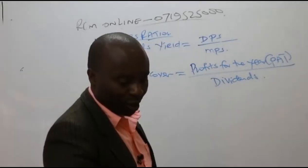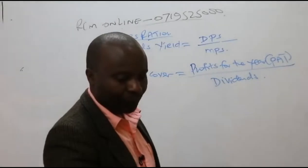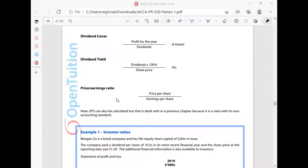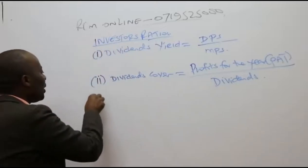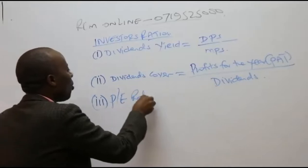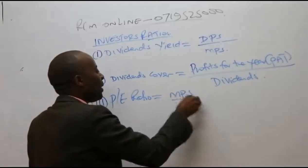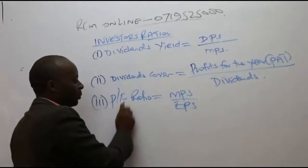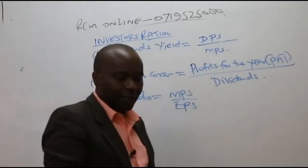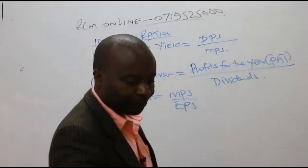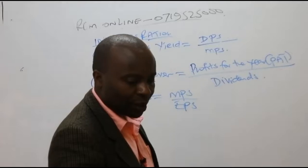The other ratio I would want us to look at is what we call the price earnings ratio — an important investor's ratio. Number three, we have the price earnings ratio, which is equal to MPS (market price per share) all over EPS (earnings per share). So this is quite important, and to demonstrate this concept well, let's look at an illustration.